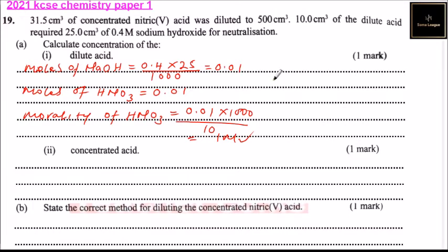Alternatively, you can use this formula: concentration multiplied by volume equals the second concentration multiplied by the second volume. So C₁V₁ = C₂V₂. This means 0.4 multiplied by 25